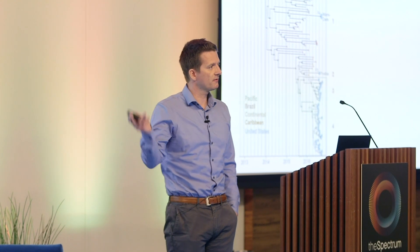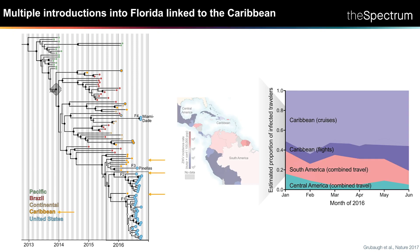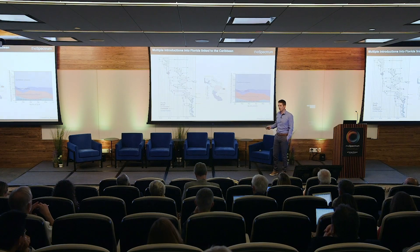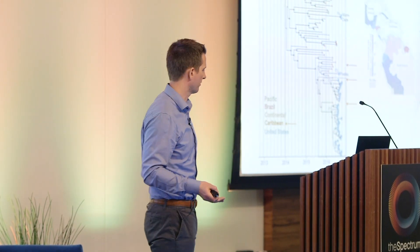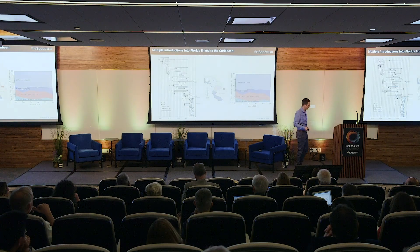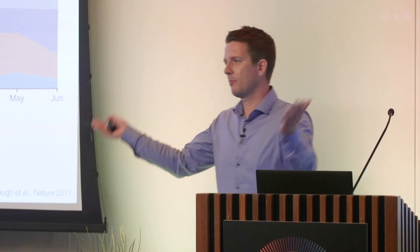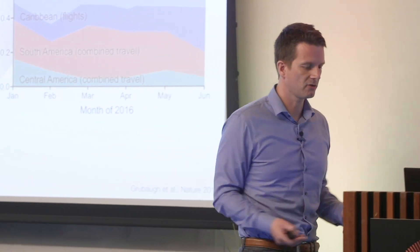That leads to the next question: where is it actually coming from? Specifically for Florida, we can show very clearly that the Caribbean is where the virus was coming from. During the Zika outbreak, the outbreak in Florida was clearly caused by travelers coming from the Caribbean. We can ask ourselves in the family tree where is the virus before we see it in Florida, and you can see a cluster came from the Caribbean here and also down here. We then validated this by looking at travel patterns and confirmed the vast majority of infected individuals were coming from the Caribbean — and interestingly, most of them actually came via cruises.